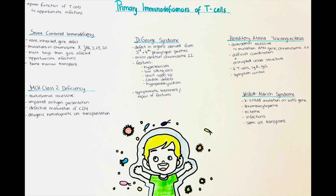The primary immunodeficiency disorders of T-cells that I will go through briefly in this video are as follows: severe combined immunodeficiency disorder, MHC class 2 deficiency, DiGeorge anomaly, hereditary ataxia telangiectasia, and Wiscott-Aldrich syndrome.